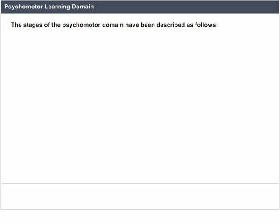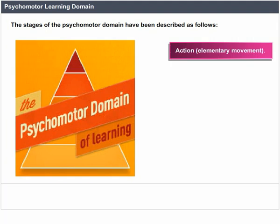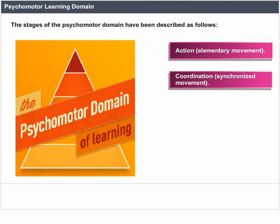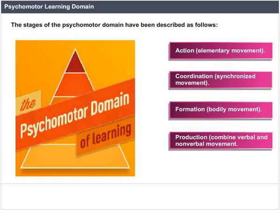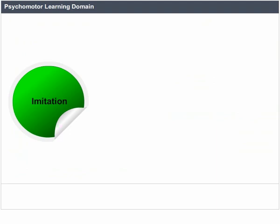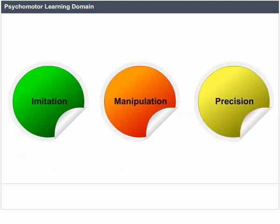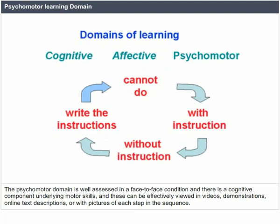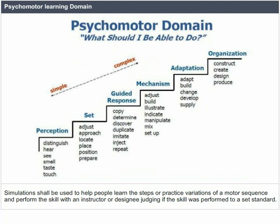The stages of the psychomotor domain are: Action — elementary movements; Coordination — synchronized movements; Formation — bodily movements; Production — combined verbal and non-verbal movements; Imitation, manipulation and precision. The psychomotor domain is well assessed in a face-to-face condition, but there is a cognitive component underlying motor skills. These can be effectively viewed in videos, demonstrations, online text descriptions, or with pictures of each step. Simulations can be used to help people learn the steps or practice variations of a motor sequence.